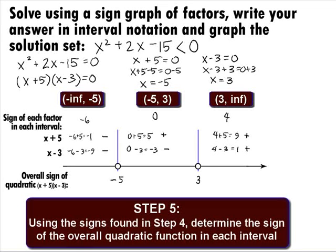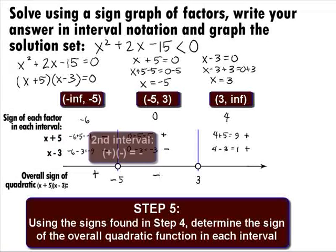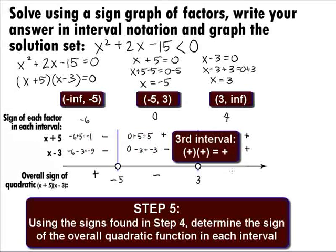In Step 5, we use the signs found in Step 4 to determine the sign of the overall quadratic function in each interval. In the first interval of negative infinity to negative 5, we have a negative times a negative, so the sign of the product is positive. In the second interval of negative 5 to 3, we have a positive times a negative, so the sign of the product is negative. In the third interval of 3 to infinity, we have a positive times a positive, so the sign of the product is positive.